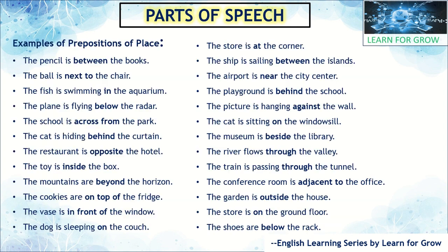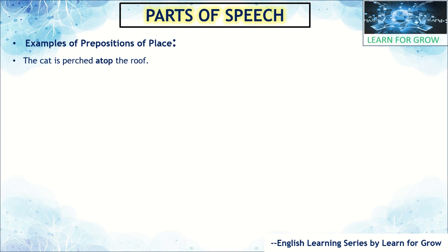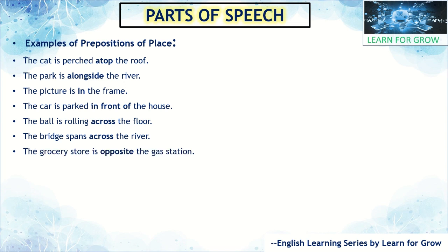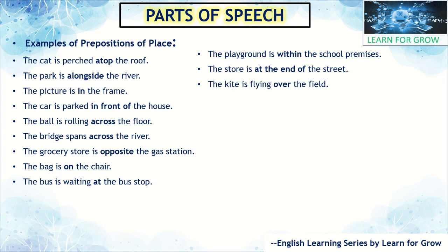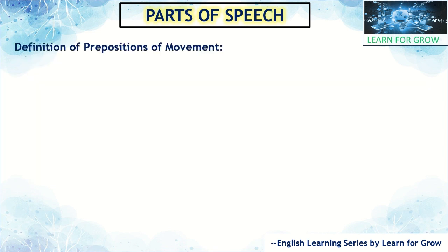More prepositions of place examples: 'The cat is perched atop the roof,' 'The park is alongside the river,' 'The car is parked in front of the house,' 'The ball is rolling across the floor,' 'The bridge spans across the river,' 'The bag is on the chair,' 'The bus is waiting at the bus stop,' 'The playground is within the school premises,' 'The store is at the end of the street,' 'The kite is flying over the field,' 'The restaurant is by the beach,' 'The cat is lying beneath the tree,' 'The school is far from the city,' 'The car is moving along the highway.'